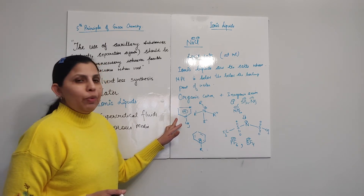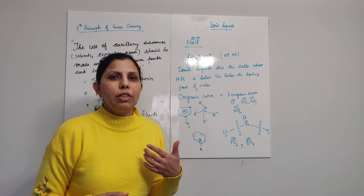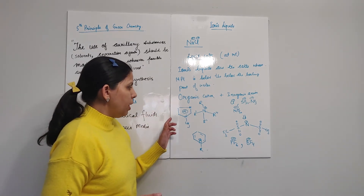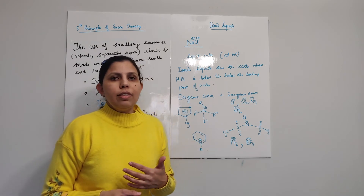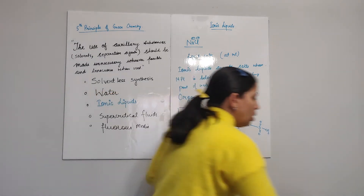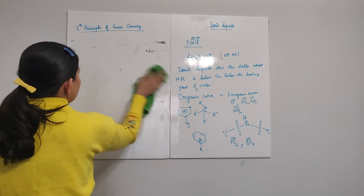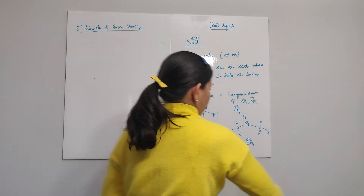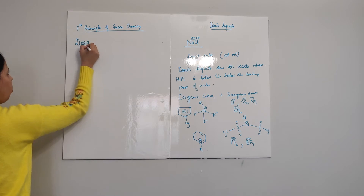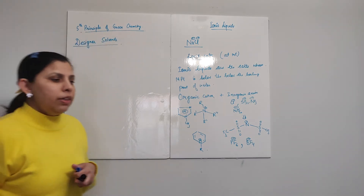An important property of ionic liquids is that they are non-volatile — in general they have a very low vapor pressure. By the suitable selection of cation and anion, we can synthesize an enormous number of ionic liquids. This is why they are also called designer solvents or tailor-made solvents — we can design the ionic liquid as per the requirement of the reaction.